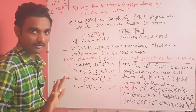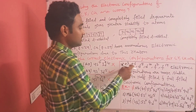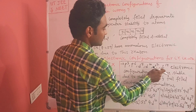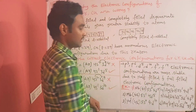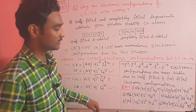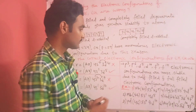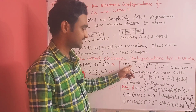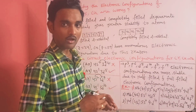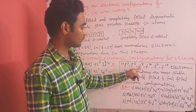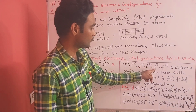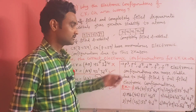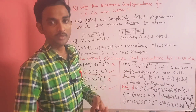Remember: p3, p6, d5, d10, f7, and f14 electronic configurations are more stable due to half-filled and fully-filled orbitals. p3 and d5 are half-filled; p6, d10 are fully-filled; f7 is half-filled and f14 is fully-filled. Because of this, these orbitals gain extra stability.